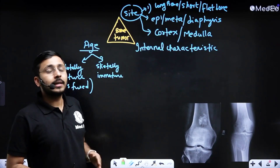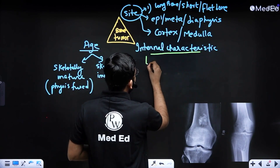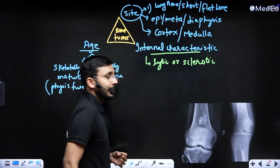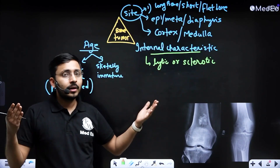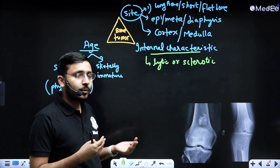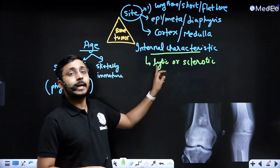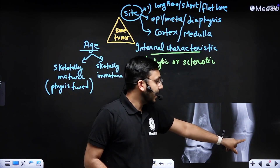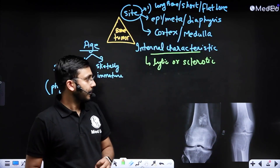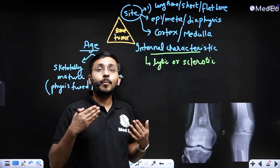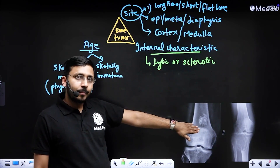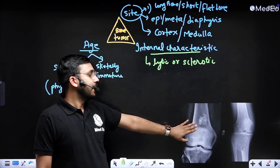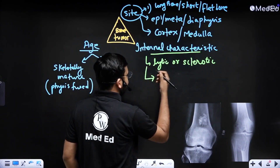Regarding the internal characteristics of the lesion, the first thing is whether it is a lytic or sclerotic lesion. Lytic means black or radiolucent — but in bone tumor terminology we use the word 'lytic' rather than 'radiolucent,' so we say a 'well-defined lytic lesion in the upper end of the tibia.' Sclerotic lesions are white or radio-opaque, but again we use 'sclerotic' in bone tumor terminology — for example, 'a well-defined sclerotic lesion in the metaphysis of the femur.'